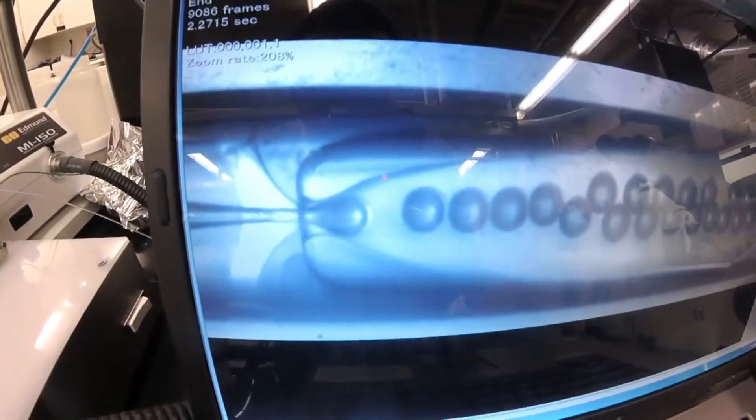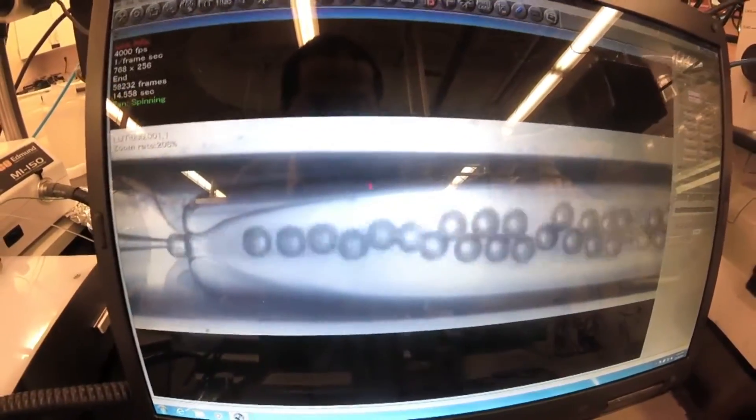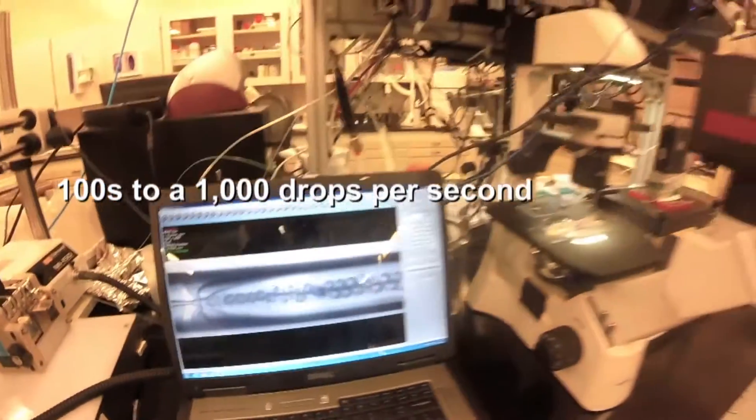What you see here is a slowed-down playback. As you can see, we're making these drops and they're very monodispersed. If I put it into real time, this is what you'll be looking at. We're making hundreds and thousands of drops per second.